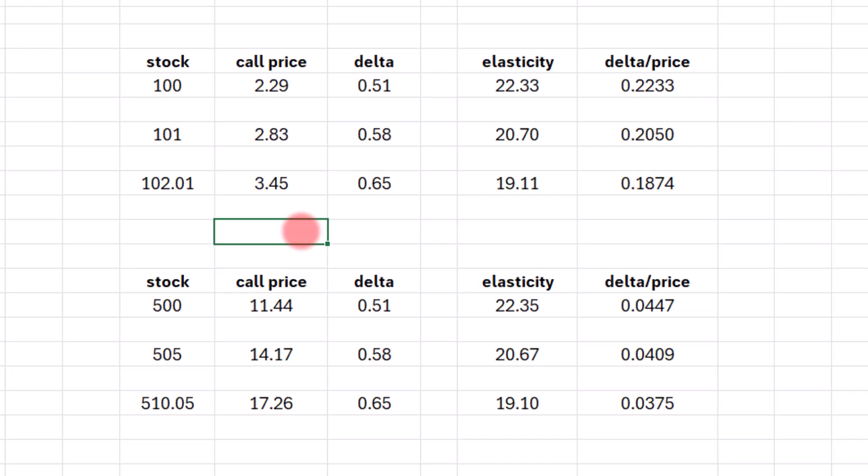But notice over here that if we take this reduced formula that this trader thought of, delta divided by price, it appears to be the same thing. Delta divided by price gave me 22.3. That's what elasticity gave us. It gave us 20.5 here with the stock at 101, gave us 20.7 here with elasticity. 18.74 here, 19.11. So it seems to be roughly a good approximation.